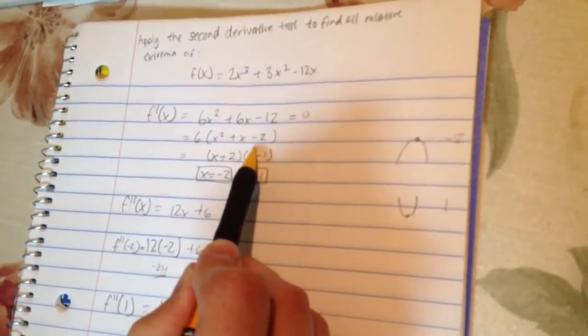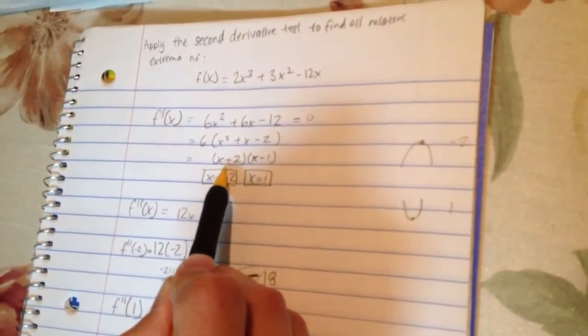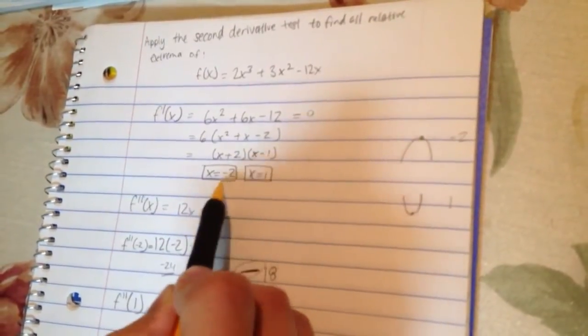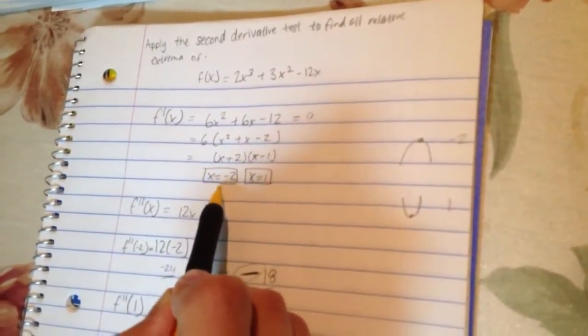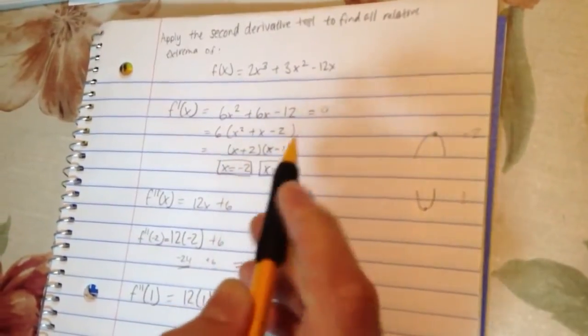So this right here, factored out, equals x plus 2 times x minus 1, leaving me with the critical points x is equal to negative 2 and x is equal to 1.